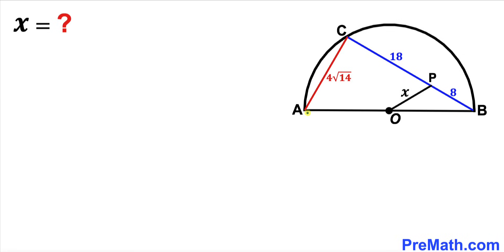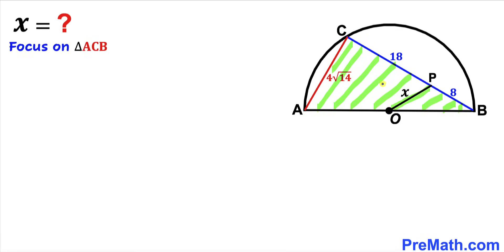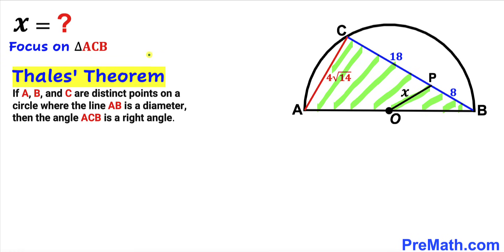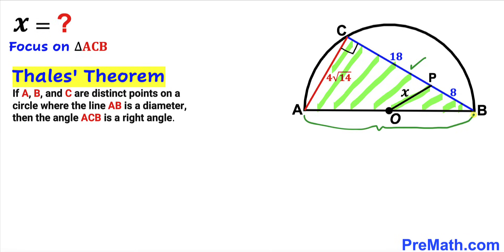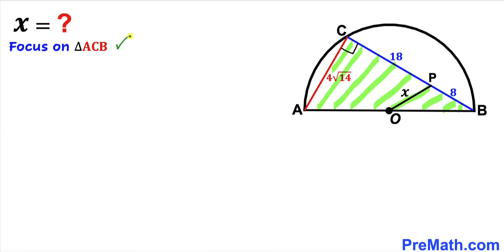Before we do anything else, we must find the radius of this semicircle. Let's focus on triangle ACB and recall the Thales theorem. According to this theorem, if A, B, and C are distinct points on a circle where AB is the diameter, then angle ACB is a right angle. Since AB is the diameter here, angle ACB is 90 degrees, making triangle ACB a right triangle.